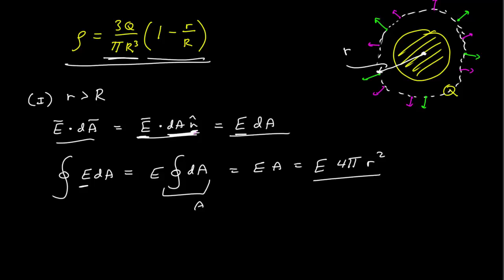Gauss's law tells us that this integral, which is the total flux, is equal to the charge enclosed in the Gaussian surface, divided by epsilon naught. Well, the charge enclosed in this Gaussian surface is simply the total charge, q. So now we can solve for the electric field.